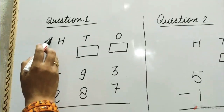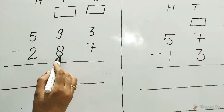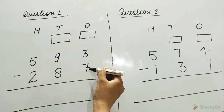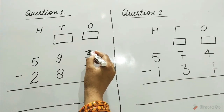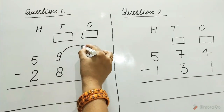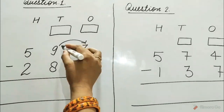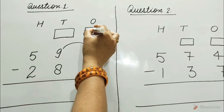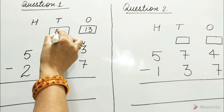Question number 1: 593 minus 287. Children, look at the ones column. 7 is bigger than 3 so it cannot be subtracted. We will borrow 1 ten from 9 tens, and 3 will become 13 ones because 1 ten plus 3 ones is equal to 13. Here 13 ones and 8 tens are left.